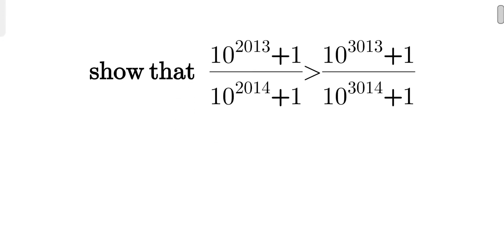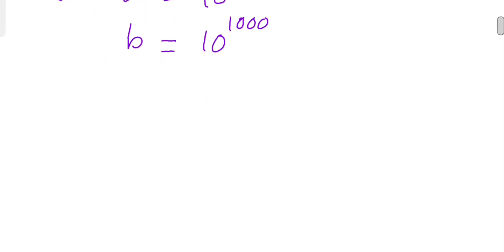So what we will do now is take a to be 10 to the power 2013 and b to be 10 to the power 1000. Rewriting this expression again gives us this form.